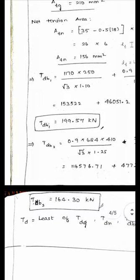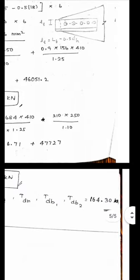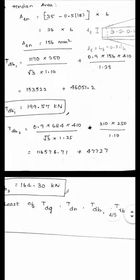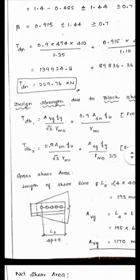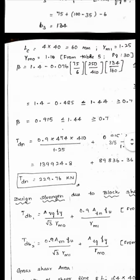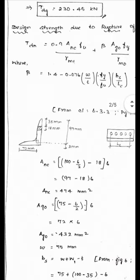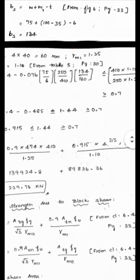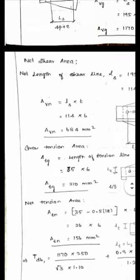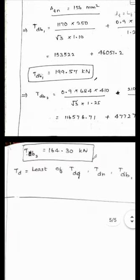TD is the least of TDG = 230.45 kN, TDN = 229.76 kN, TDP1 = 199.57 kN, and TDP2 = 164.30 kN. The least value is 164.30 kN, which is TDP2. Therefore, the design tensile strength TD = 164.30 kN, governed by block shear.